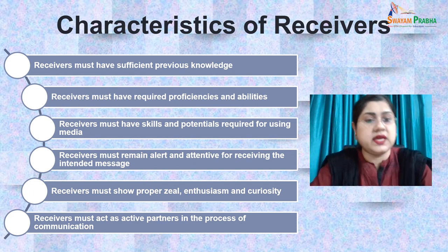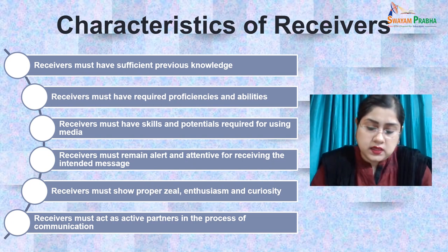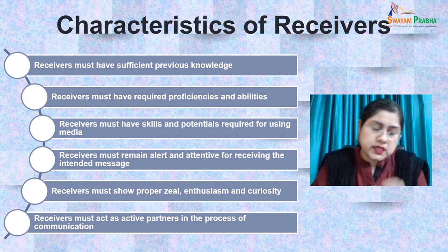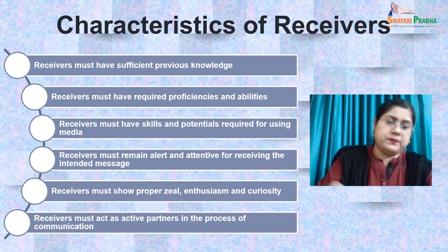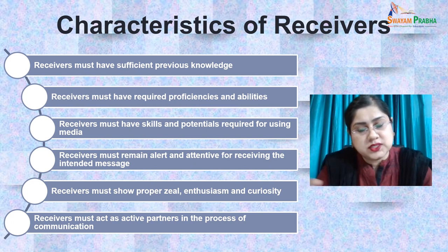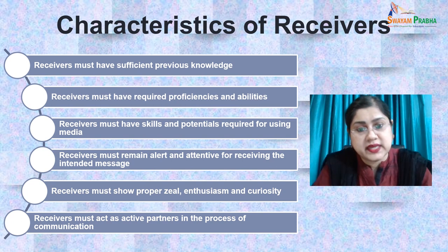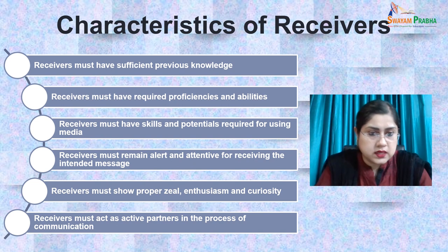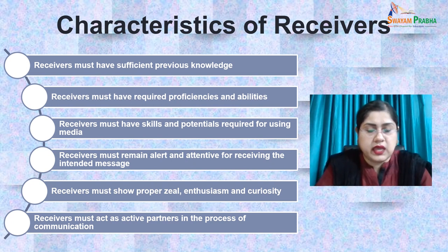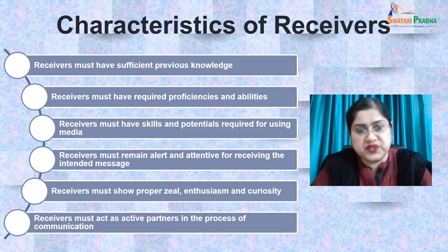The first point is that receivers must have sufficient previous knowledge and general background for receiving and understanding the communication message — they should not be ignorant about the topic to be communicated. There should be some premise building or general knowledge. We should always go for a background check. Then the receivers must have the required proficiency and abilities in terms of communication skills such as listening, observing, reading, writing, speaking, mapping, drawing, surveying, measuring, thinking, synthesizing, analyzing, evaluating, and drawing inferences.